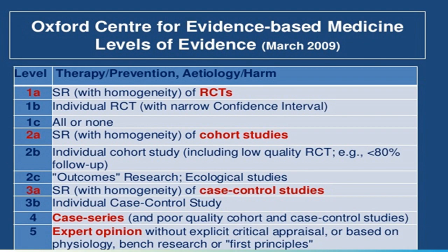2A is a systematic review with homogeneity of cohort studies taken into account. 2B is an individual cohort study. 2C is outcome research or ecological studies done in a geographical limit with a temporal constraint. 3A is a systematic review of case control studies. 3B is an individual case control study. 4 is case series. And 5 is the expert opinion — the least in the hierarchy.